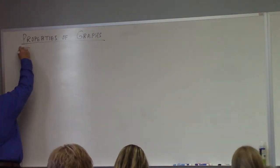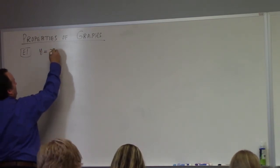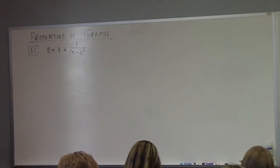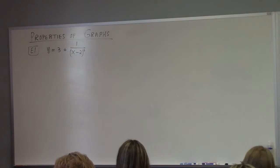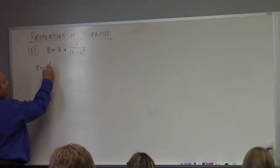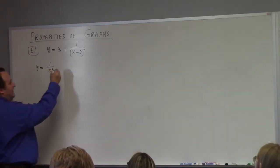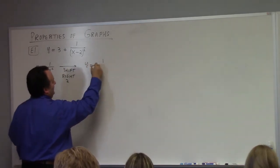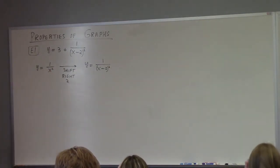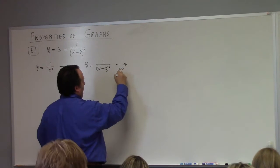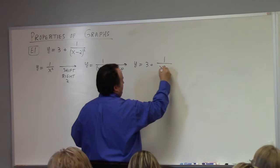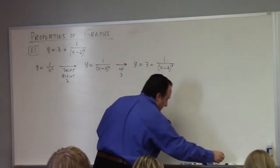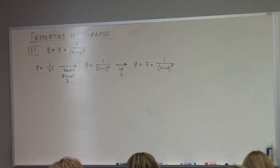Example one. What if I have y equals three plus one over x minus two squared? What would that look like? Let's graph this. I can take y equals one over x squared - I can take that graph, shift right two, which gives me y equals one over x minus two squared. And then I can shift up three, and that will be the graph. So I can shift right by two, shift up by three. If I understand the basic graph - the volcano graph - I can build my graph through transformations.